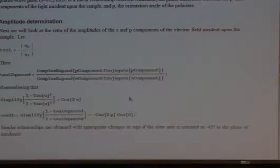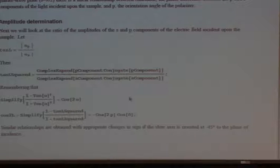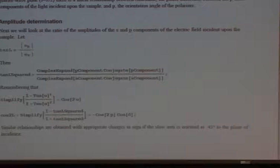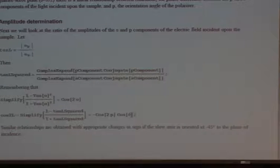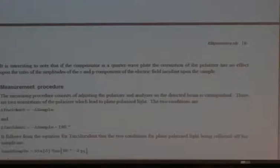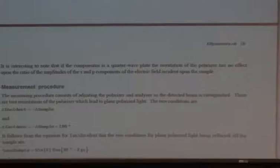Delta is the retardation of the compensator, often 90 degrees for a quarter-wave plate, and P is the polarizer angle. If we let delta equal 90 degrees, then cos(90°) = 0, and we get the result that if the compensator is a quarter-wave plate, the orientation of the polarizer has no effect on the ratios of the amplitudes of the S and P components incident upon the sample.